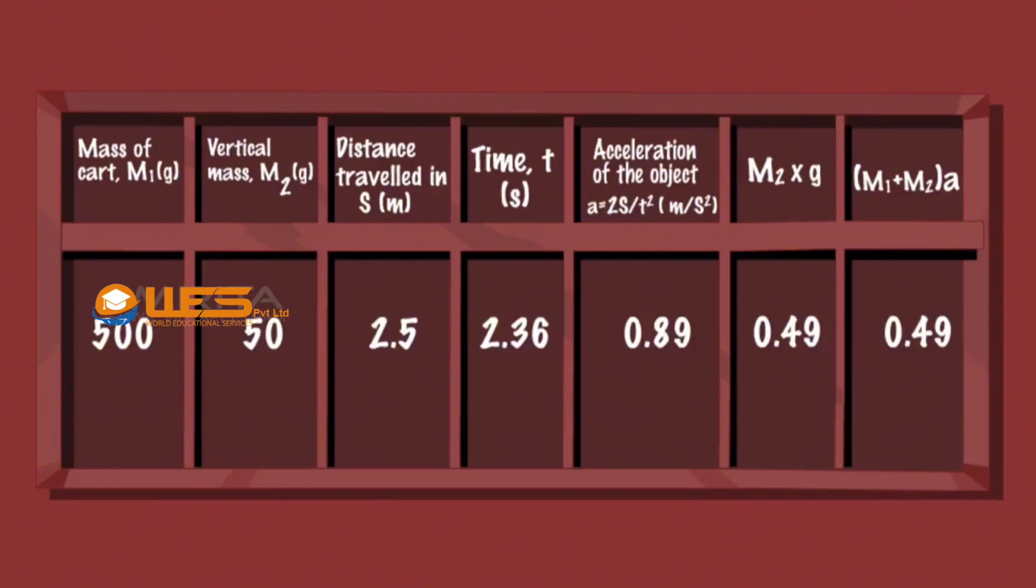Calculate m2g and m1 plus m2 times a. It is found to be the same. Hence Newton's Second Law is verified.